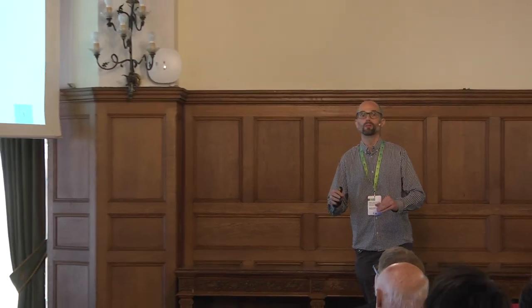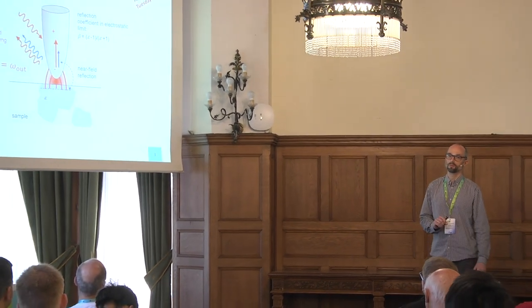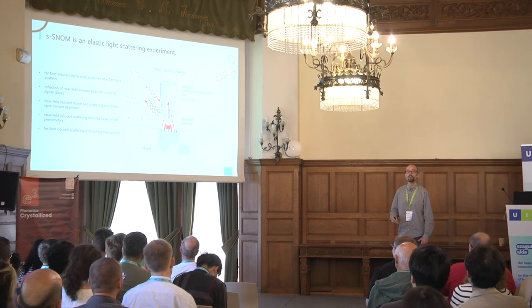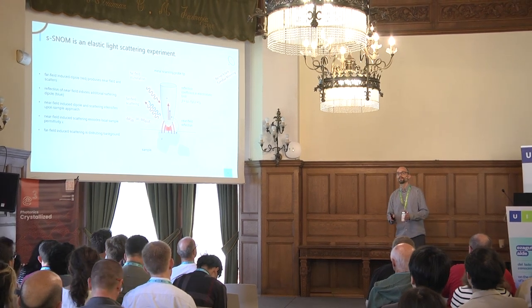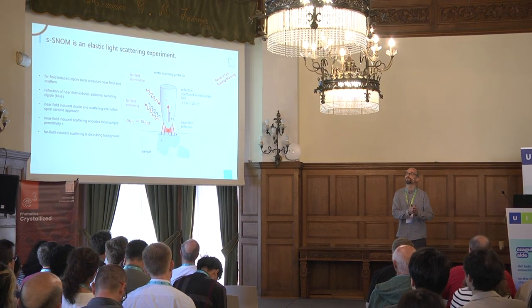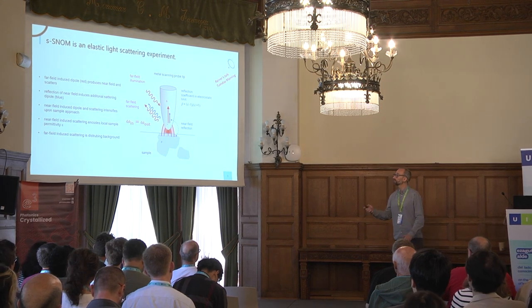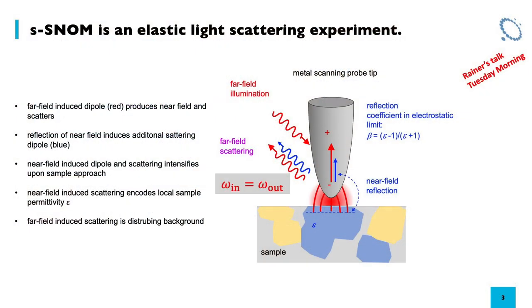I like to think about SNOM like a confocal microscope where you put a tip into the focus. In fluorescence microscopy or Raman, the signal is typically frequency-shifted with the incident beam. Not so in SNOM. In SNOM, you come in with one frequency and go out at the same frequency. So this is an elastic light scattering experiment, and this poses a few unique challenges.